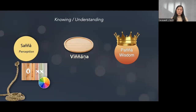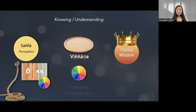Viññāṇa, which is a synonym of citta, is just awareness of the object. But viññāṇa can know a little bit more — apart from knowing the shape and color, viññāṇa can also know the three characteristics of the object. Let's do a brief revision of the three universal characteristics.